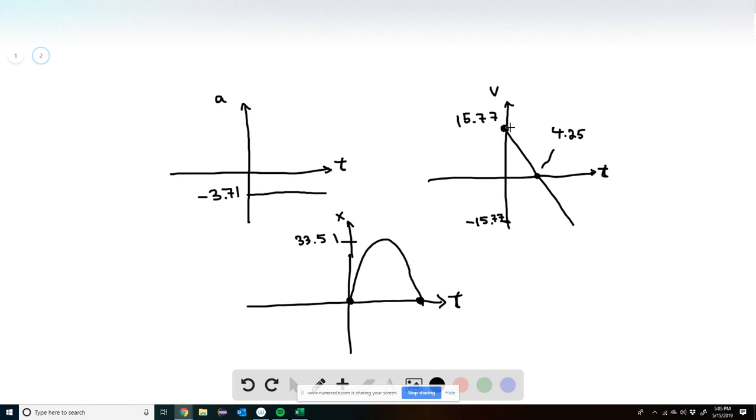Now we also calculated that the initial velocity is 15.77, and the velocity on the way down is going to be the same, except it's moving down, so we have it be negative, negative 15.77.